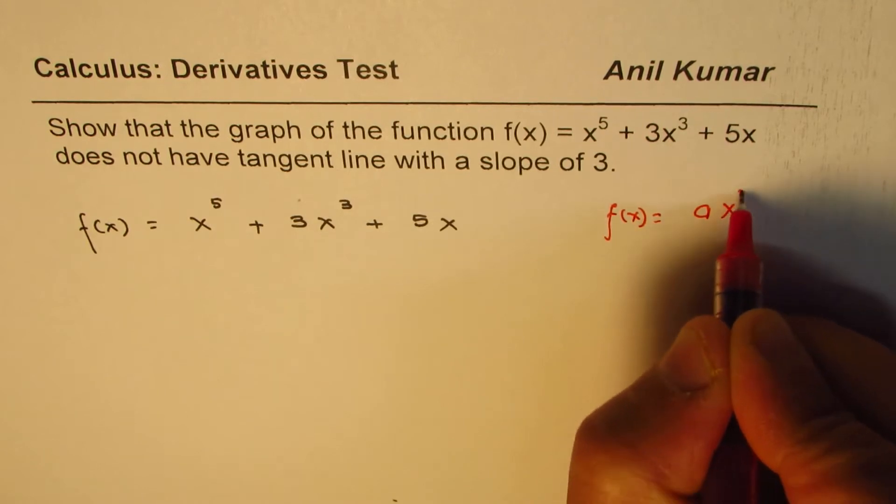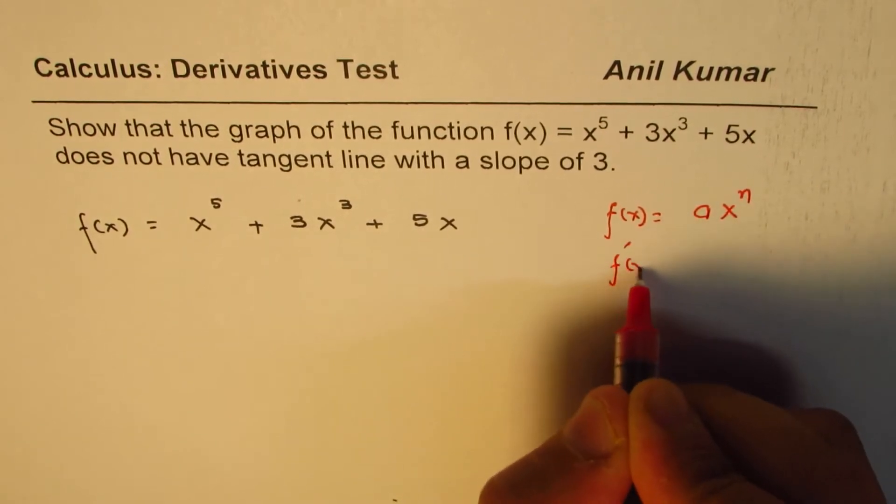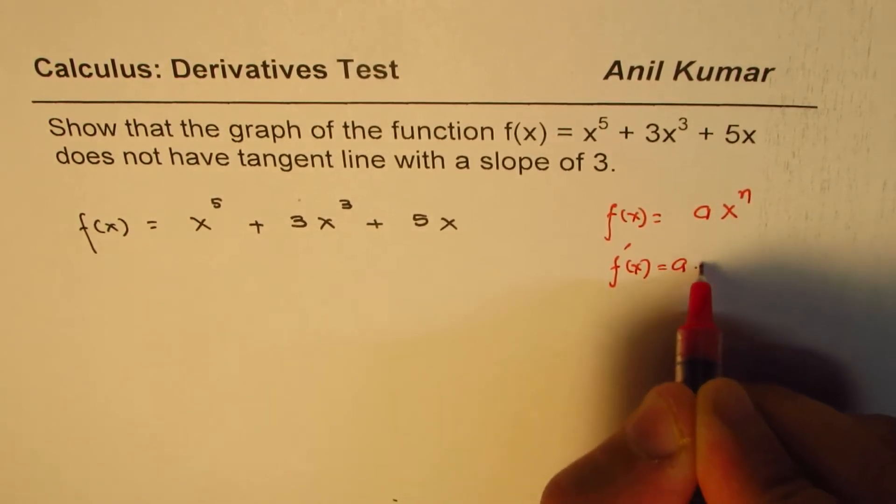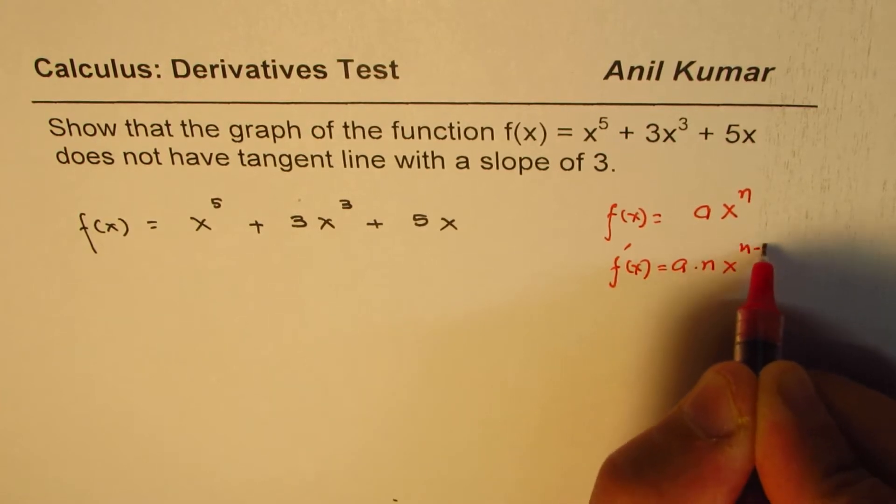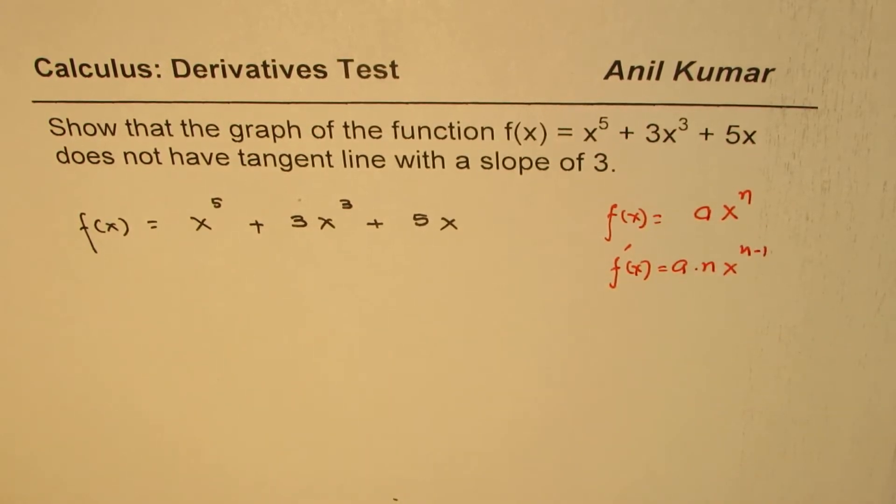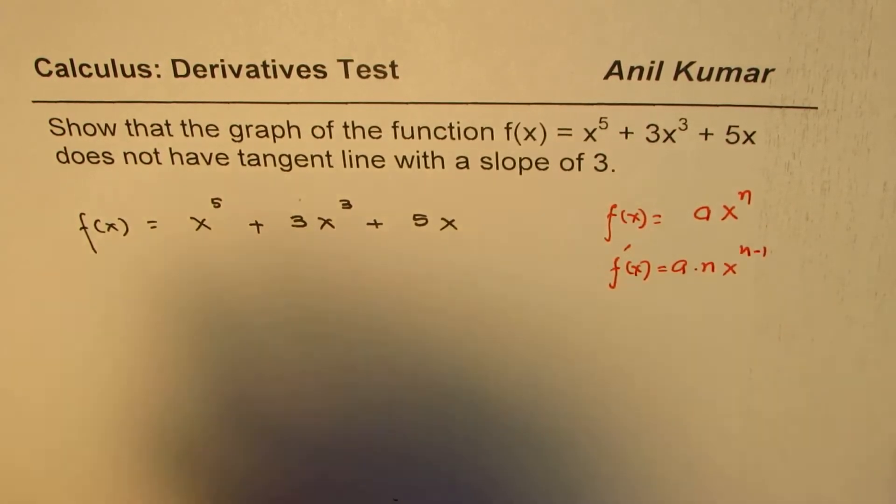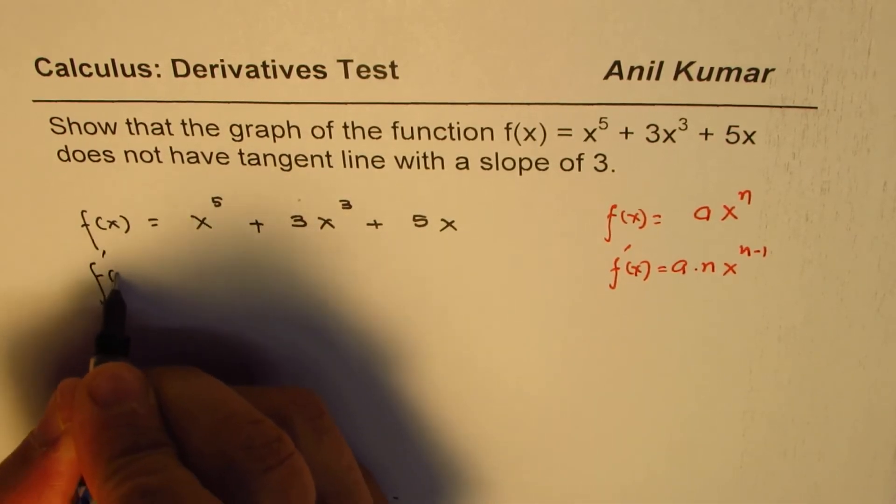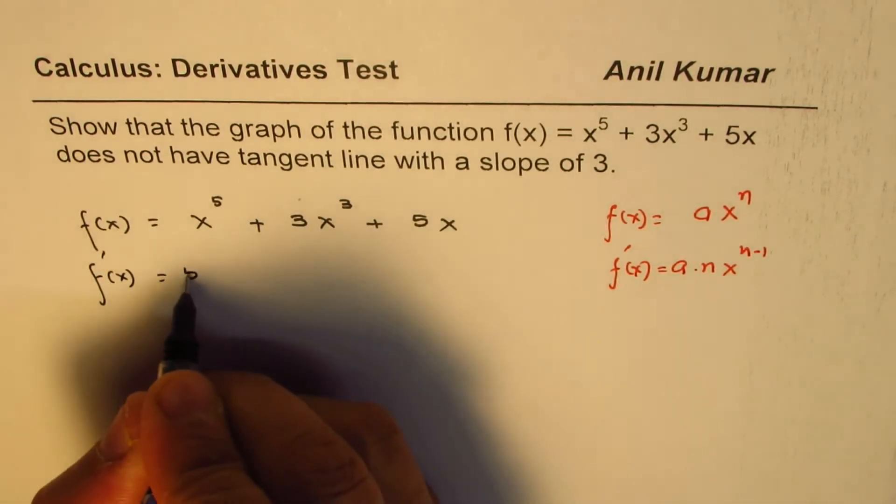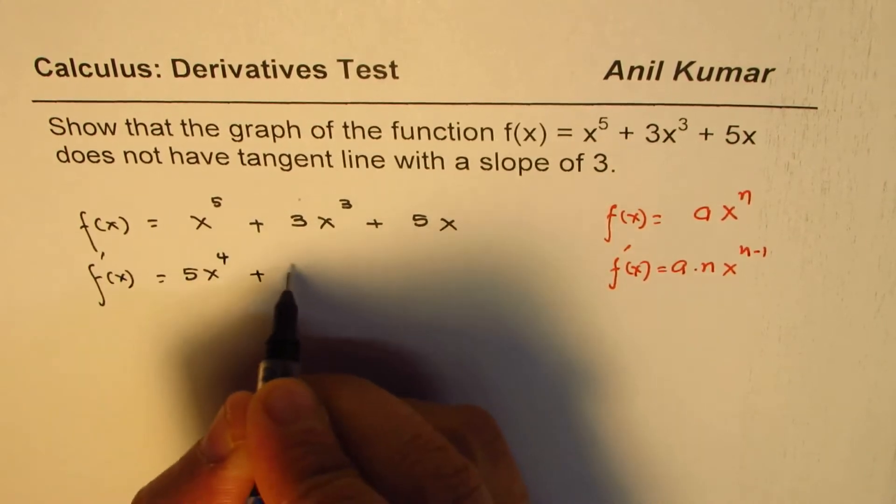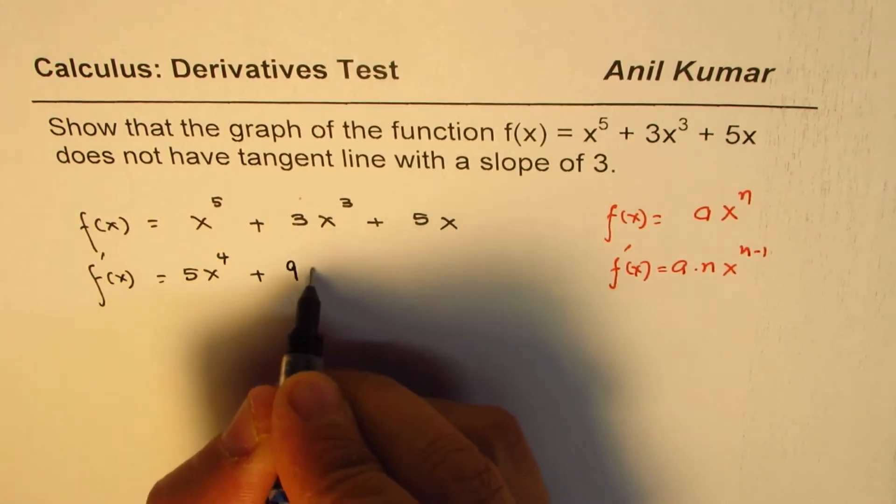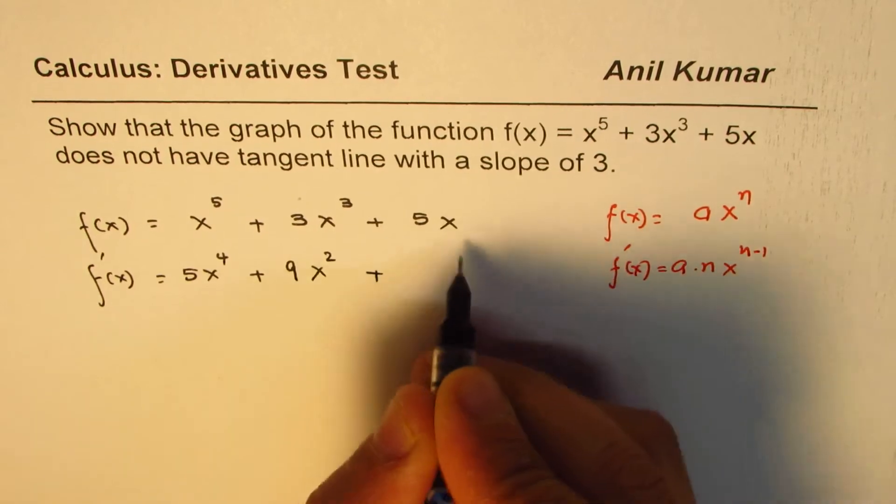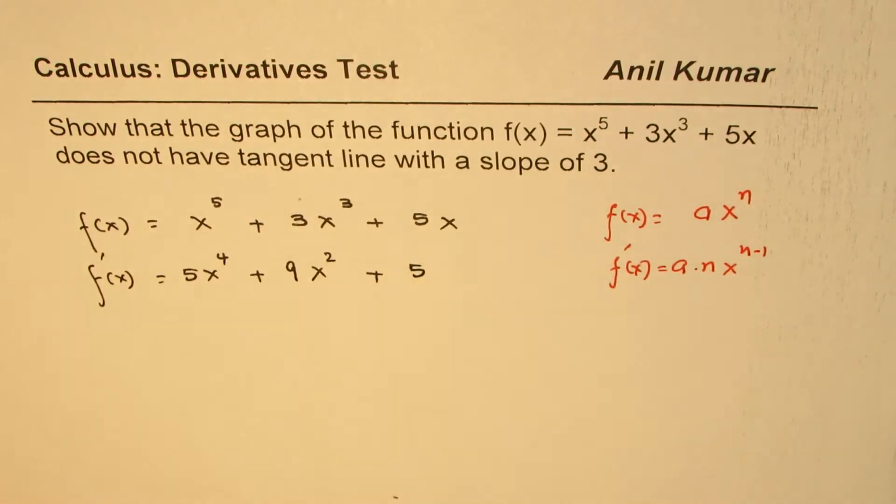So based on this power rule, we get the derivative of this function could be written as 5x^4 + 9x^2 + 5. So that's the derivative of the function.